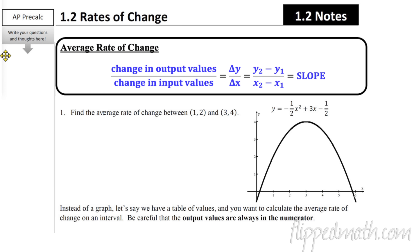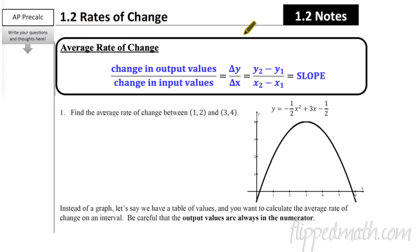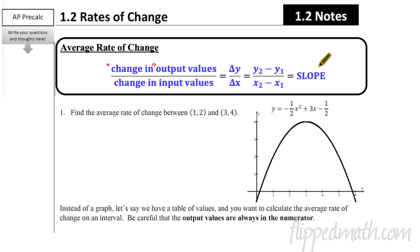Have you heard of slope before? Slope is the change in the dependent variable for every change in x — change in y over change in x. We're going to introduce delta, the Greek letter that means 'change in,' so delta-y over delta-x. You've probably seen it written as y2 minus y1 over x2 minus x1. Just make sure the dependent variables are always on top — the y's go on top.